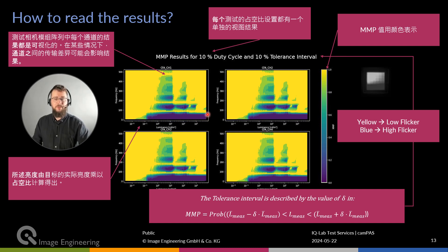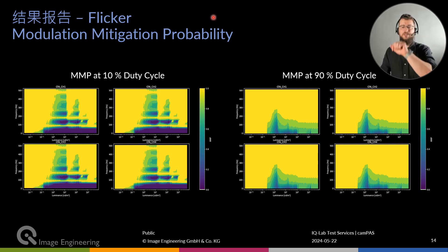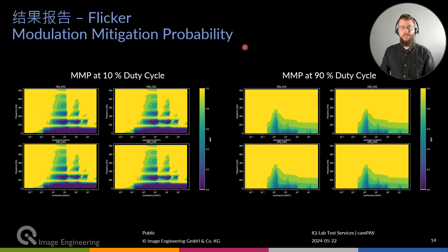This is a very important learning. Another learning is that if we change the duty cycle of the incoming light source — for example, going from a short pulse of 10% duty cycle to a long pulse of 90% — the camera performs a lot better with the higher duty cycle, which is also expected. Cameras tend to perform worse with really short pulsed light sources. We also see that the HDR nature of the sensor gets a little bit lost in the 90% duty cycle scene.